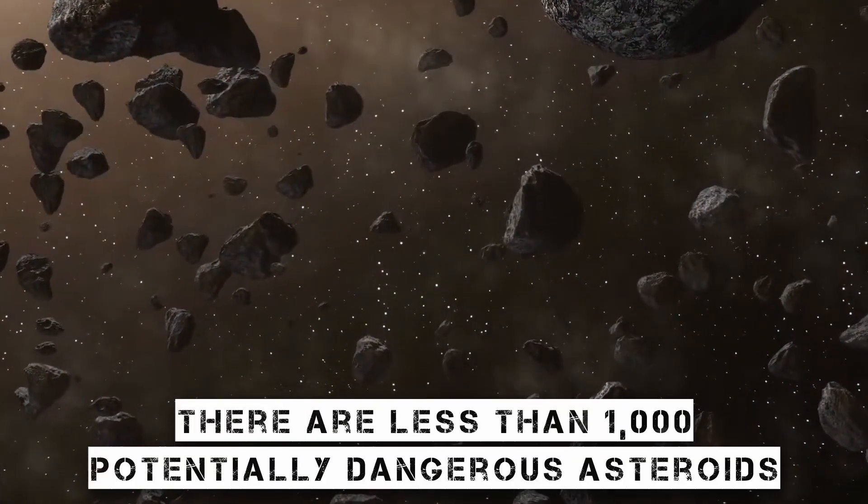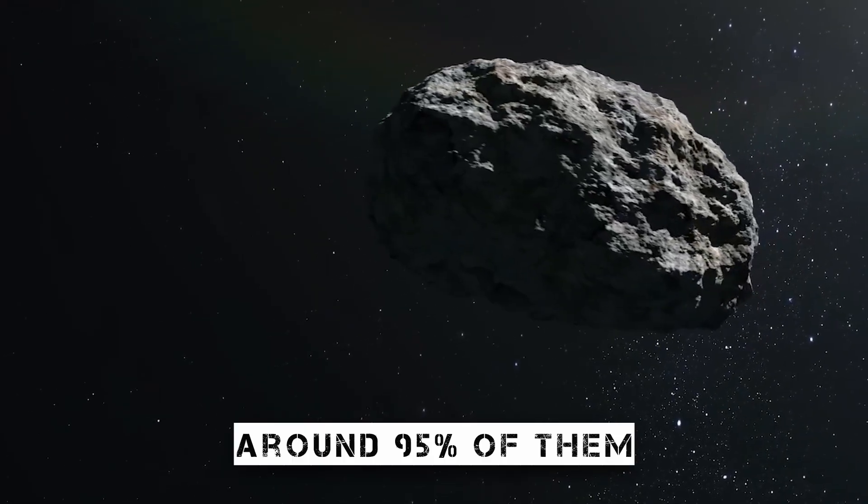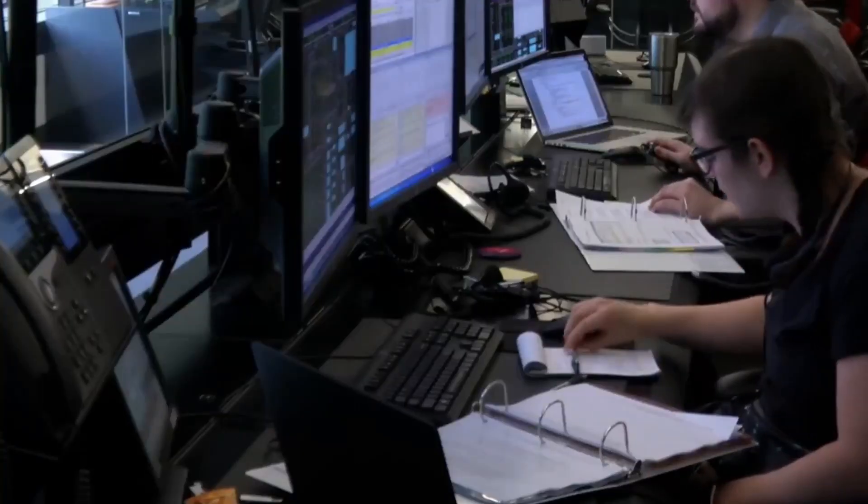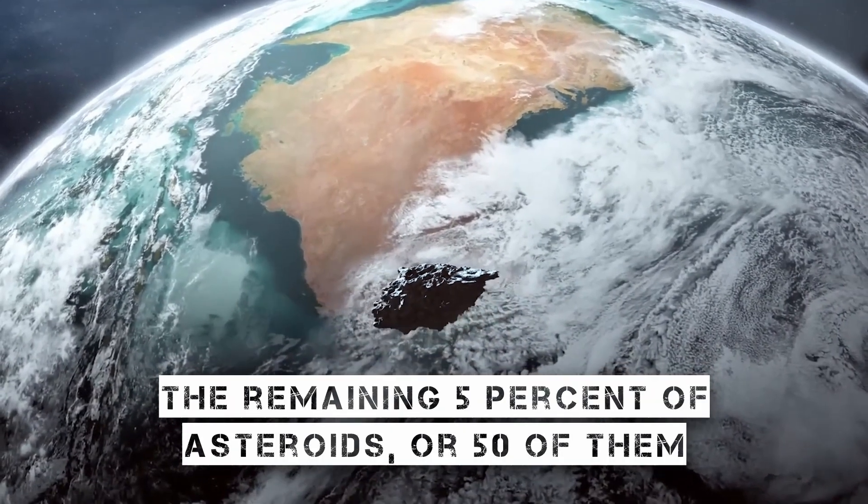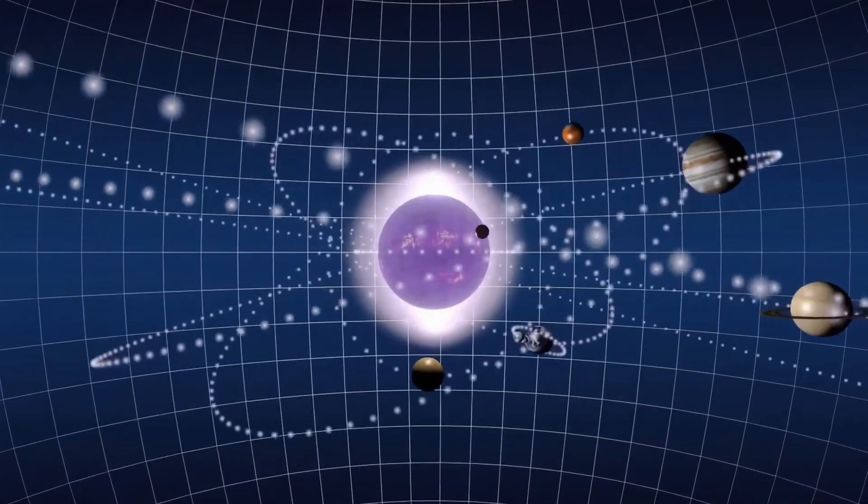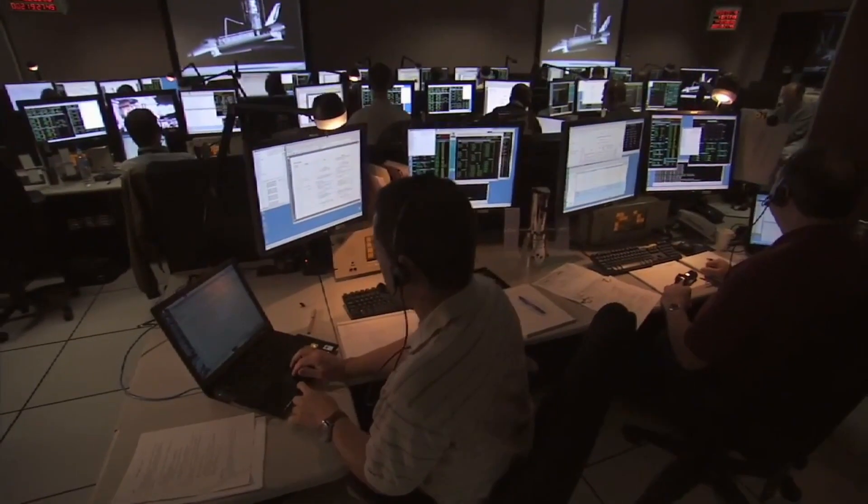There are less than 1,000 potentially dangerous asteroids, of which it is thought that we have already detected around 95 percent of them. It will take a significant amount of work to find the remaining 5 percent of asteroids, or 50 of them. All of the solar system's known objects are followed closely by NASA, but occasionally something will take us by surprise.